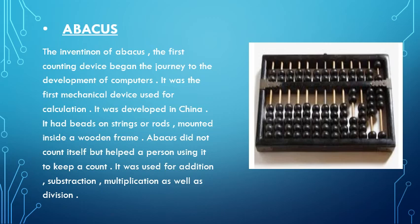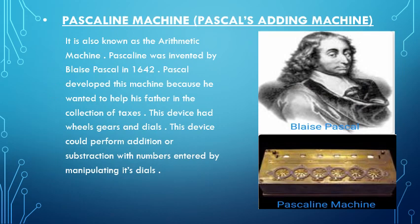The Abacus was used for addition, subtraction, multiplication, as well as division. Next is the Pascaline machine, that is Pascal's adding machine, also called the arithmetic machine. The Pascaline was invented by Blaise Pascal in 1642. He developed this machine because he wanted to help his father in the collection of taxes. This device had wheels, gears and dials, and could perform addition or subtraction with numbers entered by manipulating its dials.